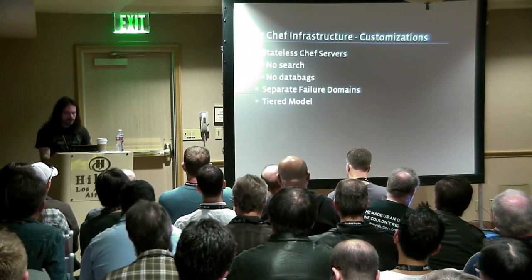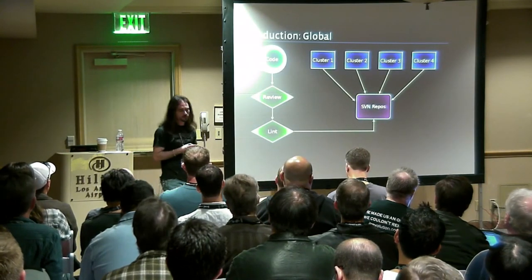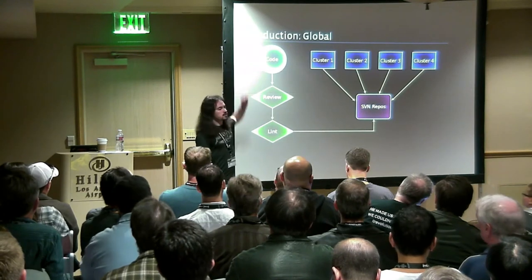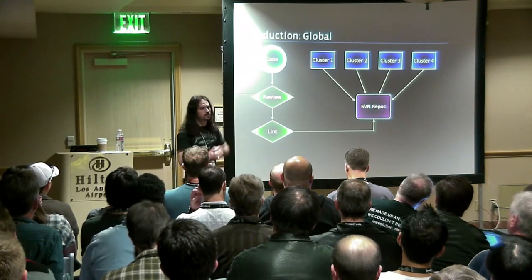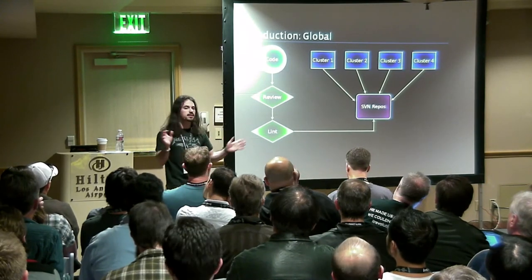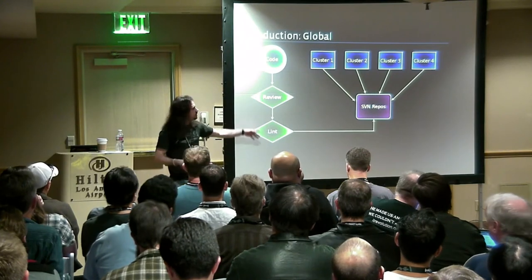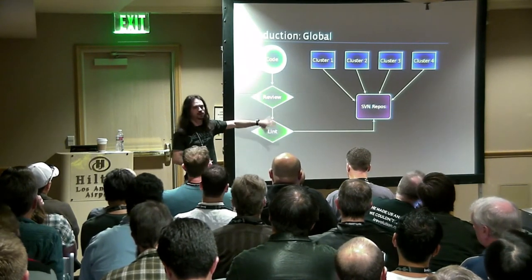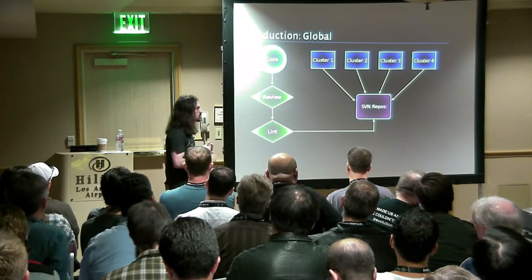With those customizations said, let's look at the infrastructure at Facebook. At a global level: you write cookbooks, roles, and all the magical stuff you want to write. Then you get a code review — you can't commit anything at Facebook without one, and I highly recommend this model. You also have to pass a lint. We do two kinds: Food Critic, an open source tool that checks for Chef correctness, and Taylor, a Ruby linter. Assuming you pass all three gates, you can commit to Subversion. For those who threw up in their mouth when I said Subversion — don't worry, we wrap it in Git.